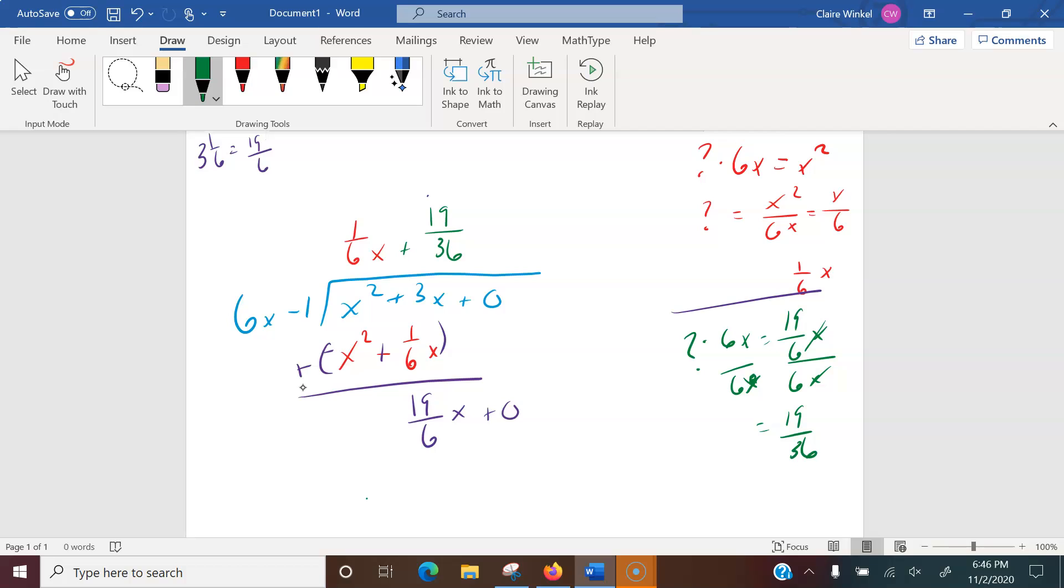Then we multiply that, 19 over 36 times 6x will give us 19 over 6x minus 19 over 36. When I subtract that, I get a positive 19 over 36. This is our remainder. For the slant asymptote, we don't really care about the remainder itself. This function will be our slant asymptote.